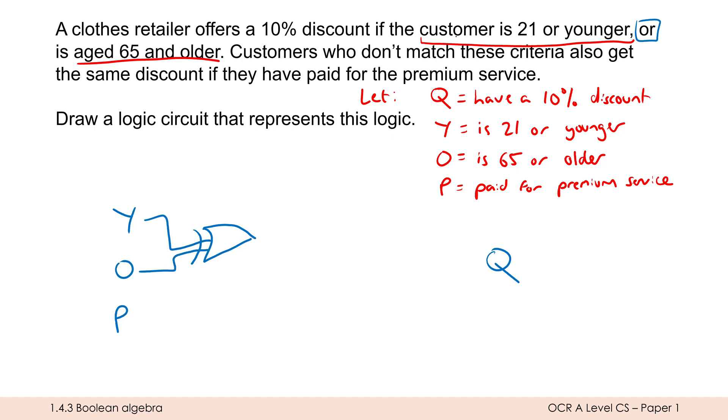Now customers who don't match these criteria also get the same discount if they have paid for the premium server. So this should be, you know, if P is true, we want to get Q as true. Because if Q is true, it means they have a 10% discount. Well, it's tempting to read maybe too much into this 'don't match' bit. You might be tempted to do something like NOT Y and NOT O. But I think it's a little bit overcomplicating it here because essentially, what are the paths to having a 10% discount? Well, either you are within a certain age range, or you've paid for the premium service.